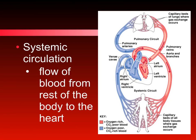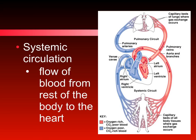The systemic circulation is the circulation from the heart to the rest of the body and back to the heart. The major blood vessels that collect blood from the rest of the body and enter the right atrium are the superior vena cava and the inferior vena cava. The blood returning to the heart is blue because the blood vessels have already delivered their oxygen. The blood vessel that delivers oxygen to the rest of the body is the aorta, which carries blood to the rest of the tissues.